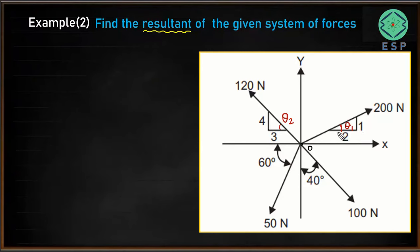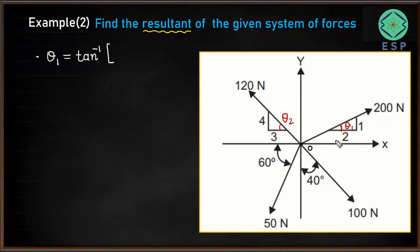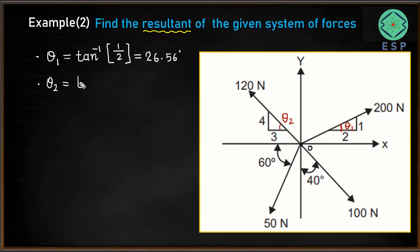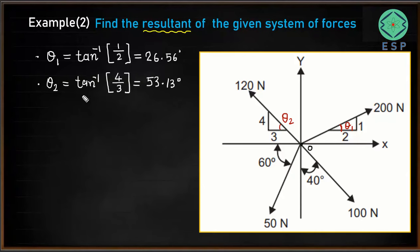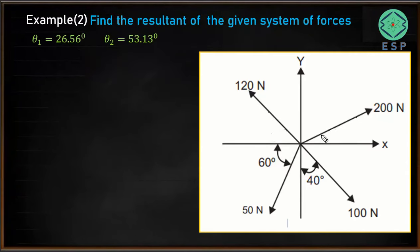We have a triangle where one side is 1 and the other is 2, so we can find theta 1 as tan inverse of 1 divided by 2, which gives 26.56 degrees. Similarly, we can find theta 2 as tan inverse of 4 by 3, which gives 53.13 degrees. So theta 1 is 26.56° and theta 2 is 53.13°.